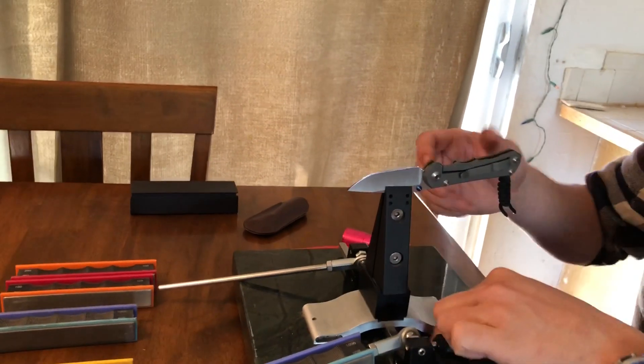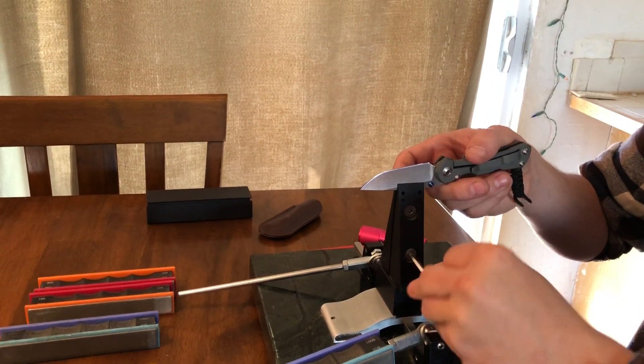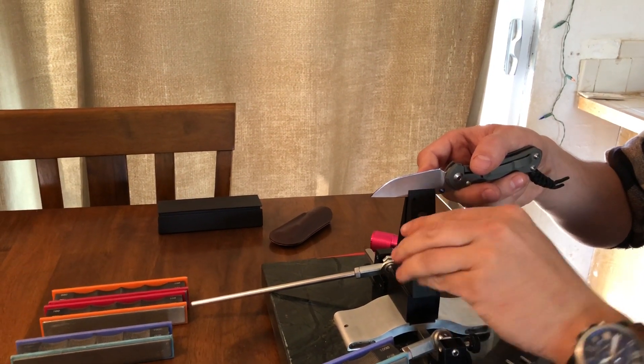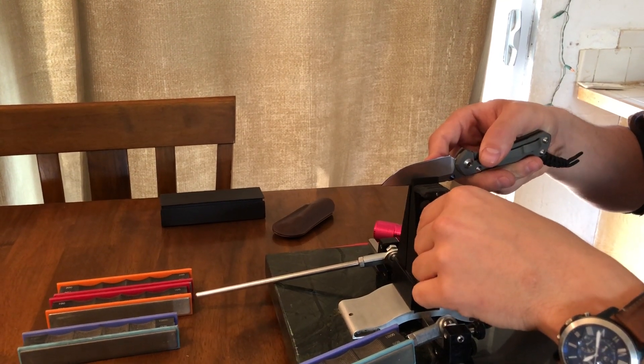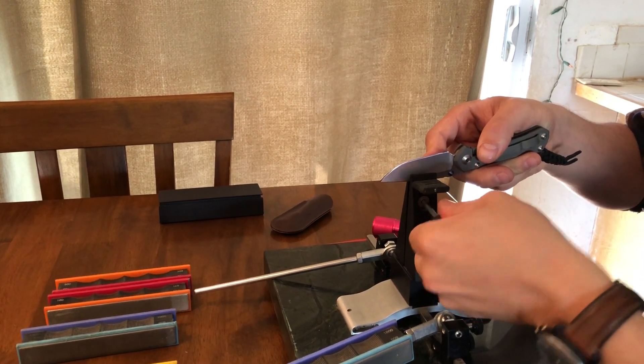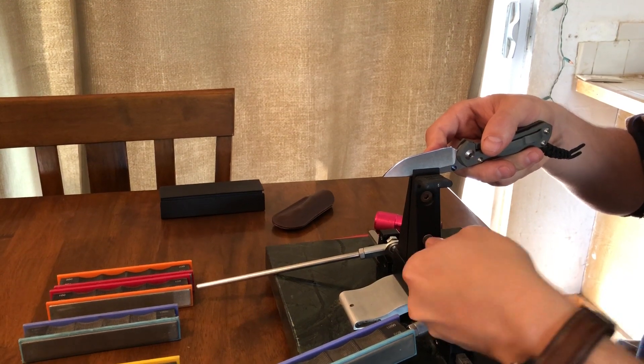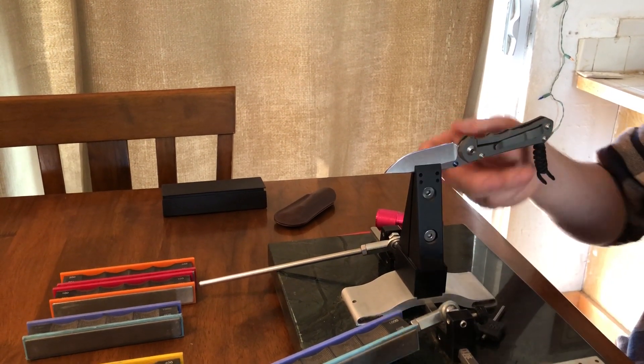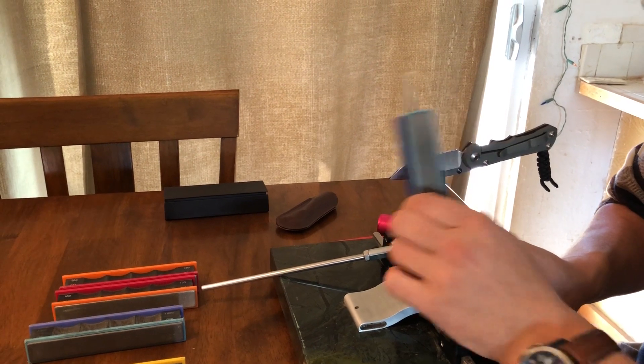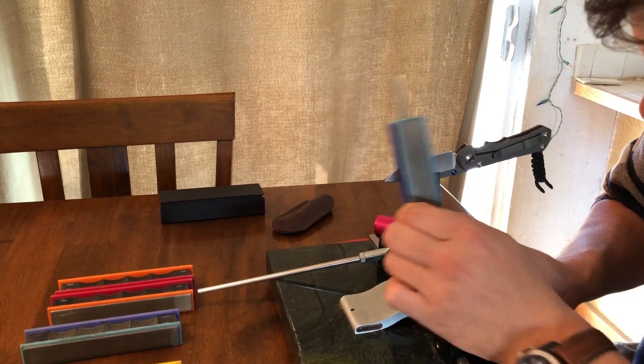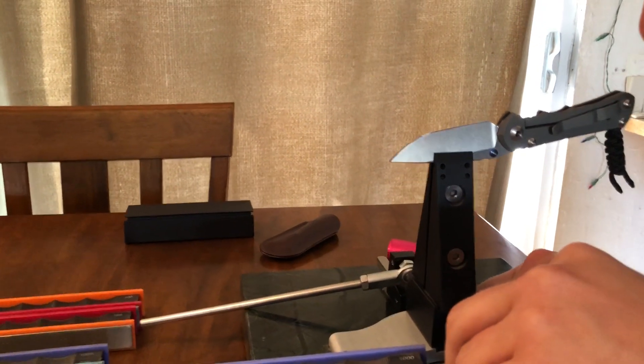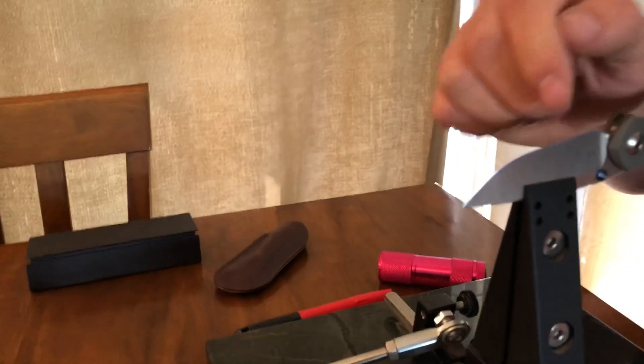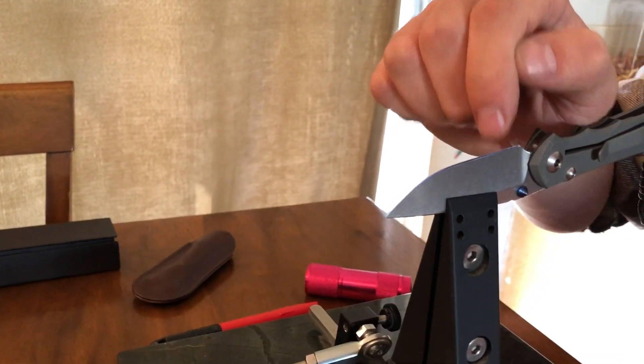So again loosen the knife a little bit and then reinsert your depth key and clamp it just a little bit farther forward and then try it again. That's a little bit better but I'm still not quite there. I'm still removing the metal at the very edge of the bevel here and I'm removing it towards the shoulder here.